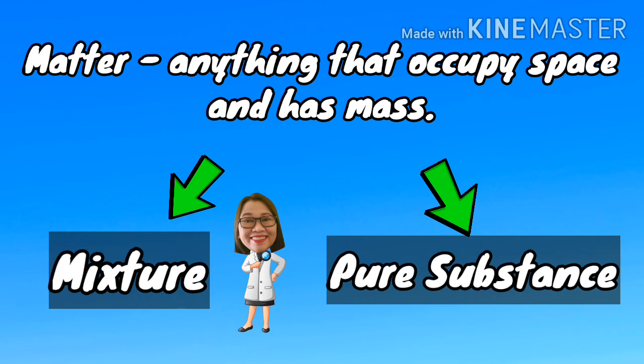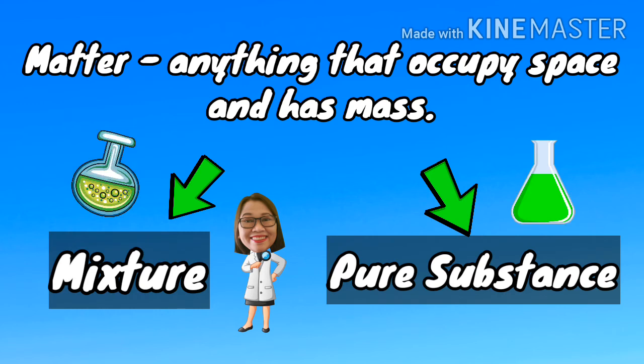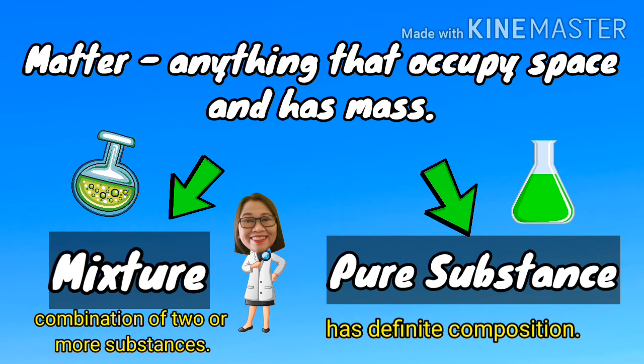Matter is anything that occupies space and has mass. Matter can be classified into two: mixture and pure substance. Mixture is a combination of two or more different substances, and pure substance is a substance which is composed of only one type of atom or particle and has chemical and physical properties that do not change.